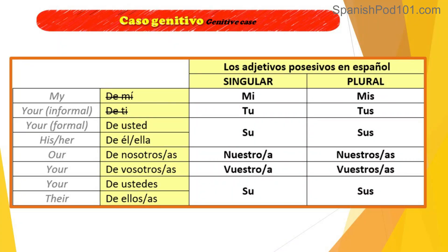We're going to learn the different possessive adjectives in Spanish. To say 'my' in Spanish, it's not correct to say 'de me' or 'of me' — it doesn't work like that. The possessive adjective singular would be 'mi' and plural would be 'mis.' For 'your' informal, we're going to say 'tu' and the plural 'tus.' We don't say 'de ti.'